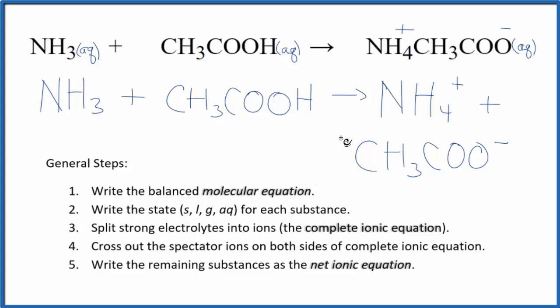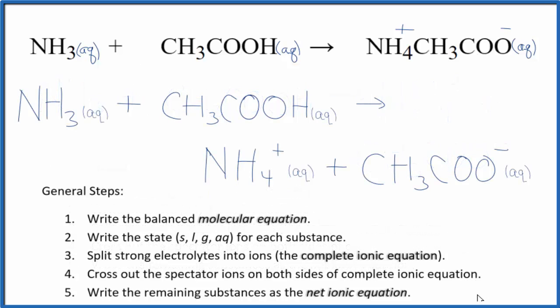So this is our net ionic equation. I'll clean it up and write the states in. We'll have our net ionic equation for NH3 plus CH3COOH — the net ionic equation for ammonia plus acetic acid.